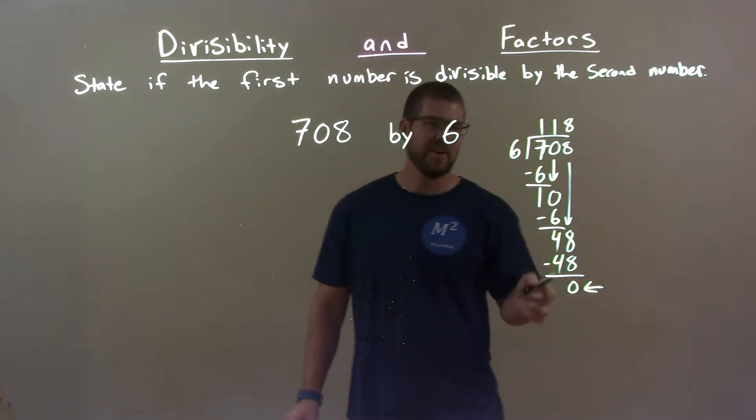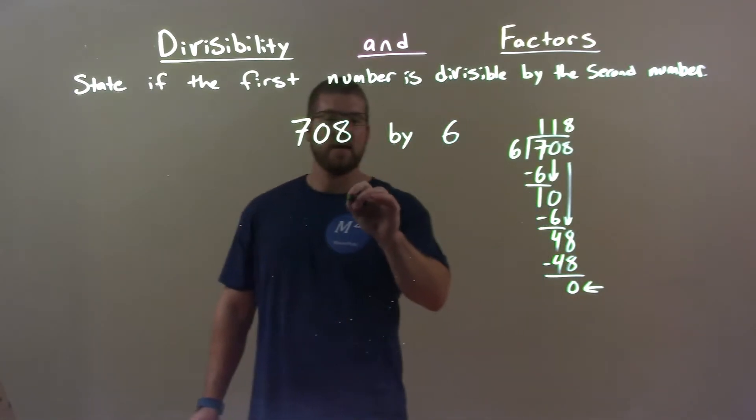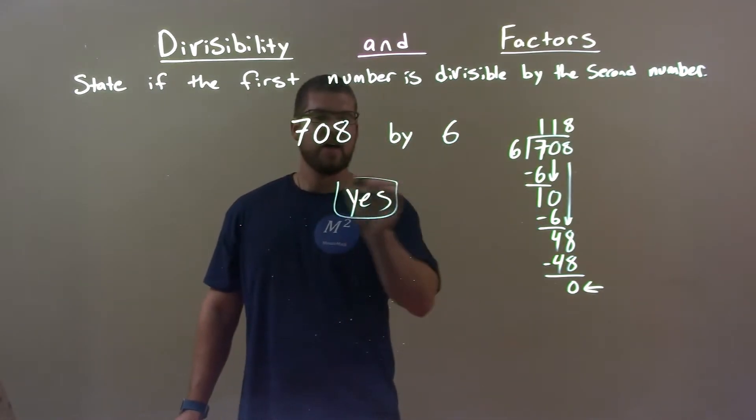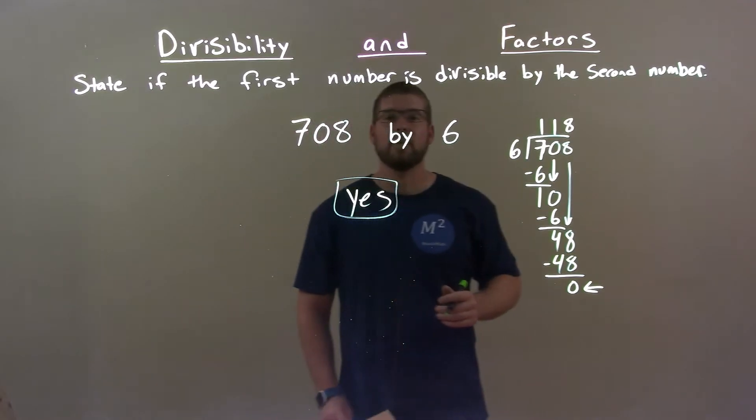Now we have a remainder of 0, which tells us that yes, 708 is divisible by 6.